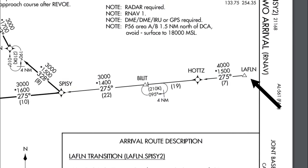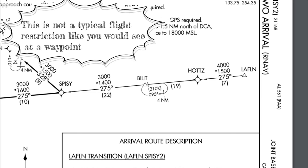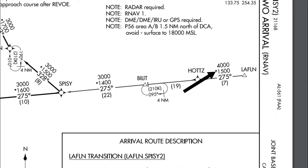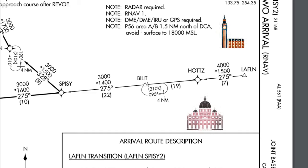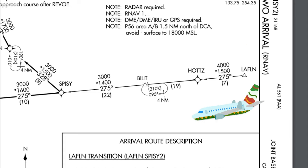We're going to start at the Laughlin waypoint. Between Laughlin and HOTS there are a few important pieces of information. The top number, 4,000, is the lowest safe altitude to fly on this leg. Underneath that, the starred number 1,500 tells us there are ground obstacles at about 1,500 feet. Below that is the heading for this leg, and the bottom number in parentheses — 7 — gives us the nautical miles from Laughlin to HOTS.